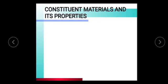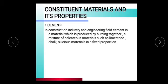Now we will discuss the constituent materials and their properties. The first constituent is cement. In the construction industry and engineering field, cement is a material produced by burning together a mixture of calcareous materials such as limestone, chalk, and siliceous material in a fixed proportion.